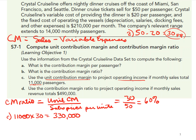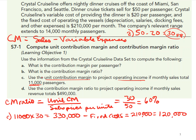To calculate operating income, once we have our contribution margin, we subtract our fixed costs, which are $210,000. So $330,000 minus $210,000 means $120,000 would be our operating income at a level of 11,000 passengers.